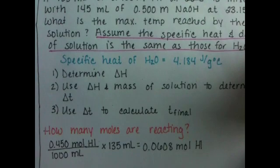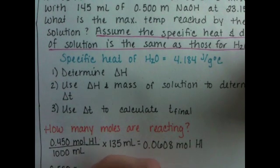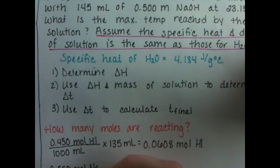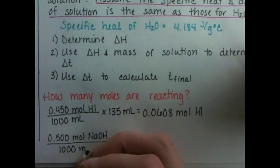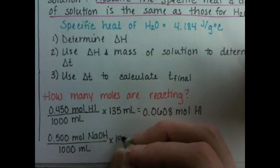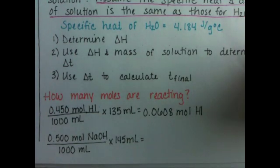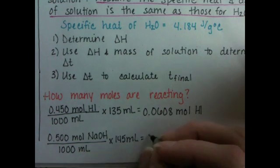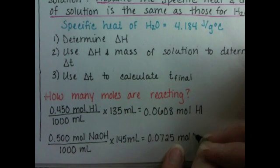Now we're going to calculate how much sodium hydroxide we have using its concentration, 0.500 moles of sodium hydroxide, NaOH, for every 1 liter or 1,000 mL, times the volume, 145 mL. And that works out to be 0.0725 moles of sodium hydroxide available.